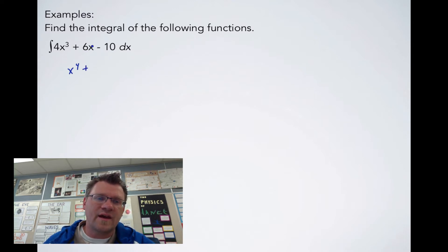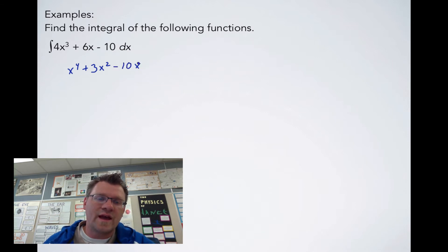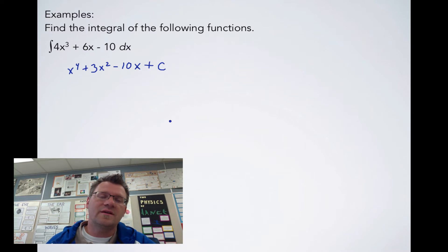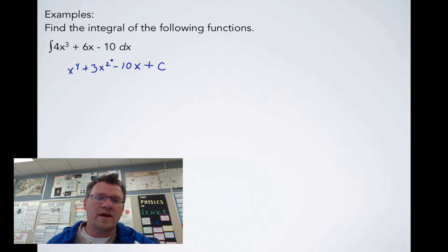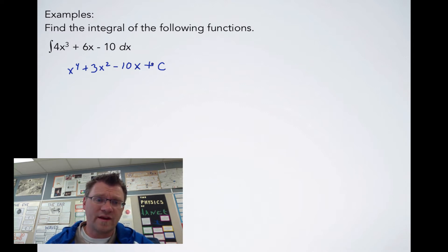For 6x, it should have been 3x². Because if this was x² and I took the derivative, I'd bring the 2 down and multiply it by 3, giving me 6x. When you have a constant like -10, that means you only had an x term, since the derivative of x is 1. And there could have been a constant, so we always write plus c at the end, because when you take the derivative of a constant, you get 0. So the integral is x⁴ + 3x² - 10x + c.